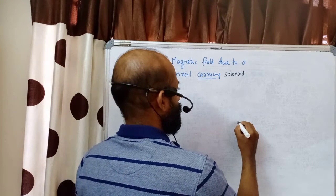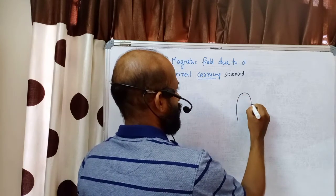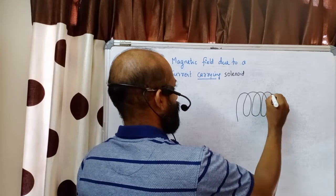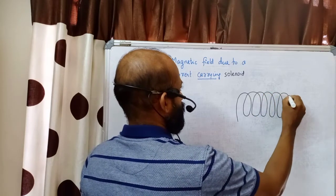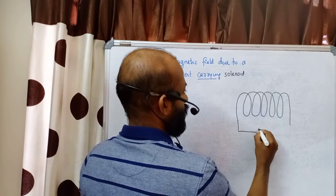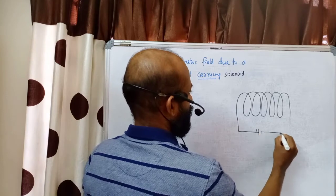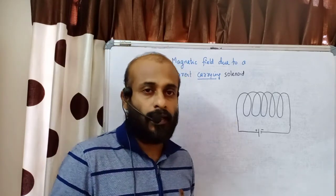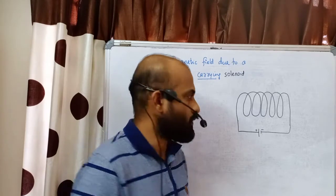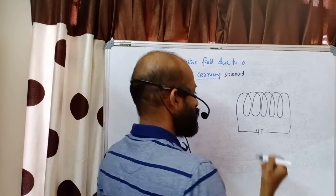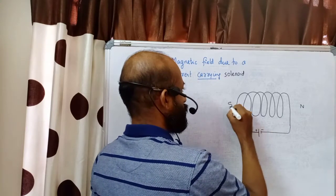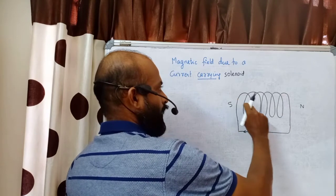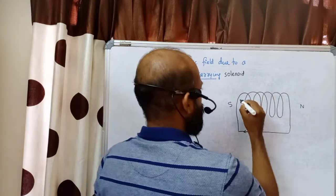Here is the diagram of a solenoid with closely spaced turns. One end of the solenoid is connected to the positive terminal of the battery and the other end to the negative terminal. A current-carrying solenoid behaves like a bar magnet — one end is the north pole and the other end is the south pole.